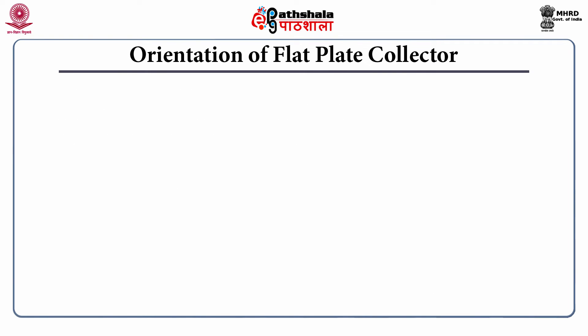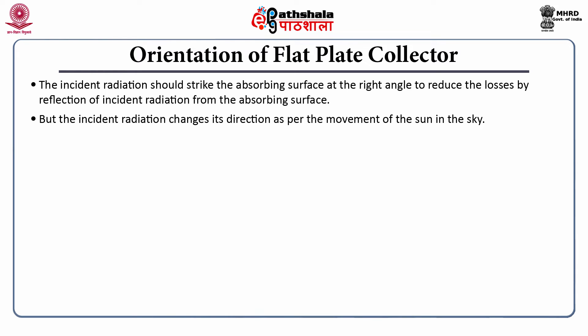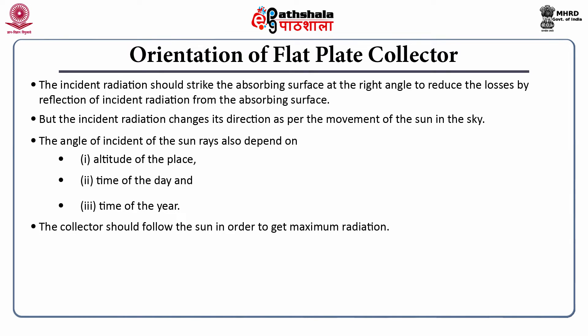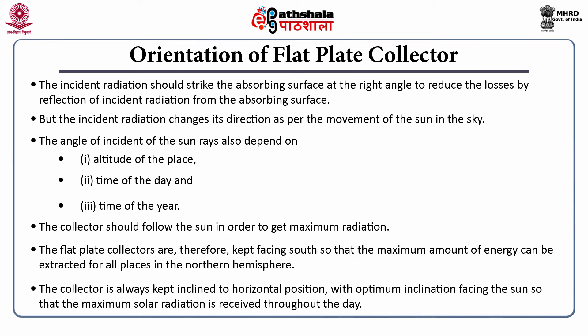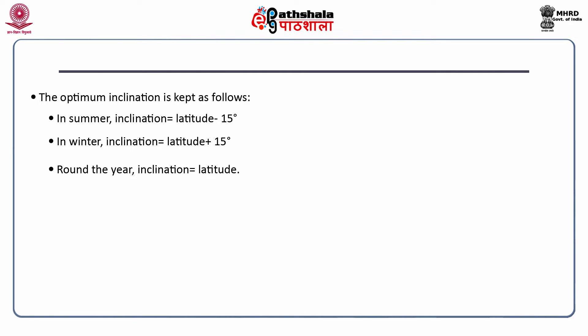For orientation, the incident radiation should strike the absorbing surface at a right angle to reduce reflection losses. Flat plate collectors are kept facing south so that maximum energy can be extracted for all places in the northern hemisphere, kept in line with horizontal position at optimum inclination. The optimum inclination in summer is latitude minus 15°, in winter it is latitude plus 15°, and year-round it is equal to the latitude.